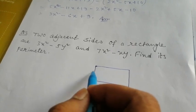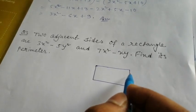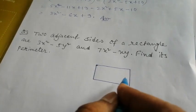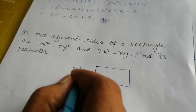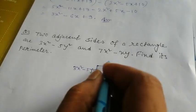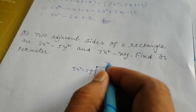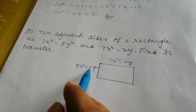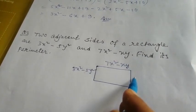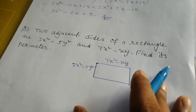So this is your rectangle and adjacent sides, two sides are given. Like this is your 3x² - 5y² and this is your 7x² - xy. Now if you have this value, it will be done in front of you because in rectangle opposite sides are equal.